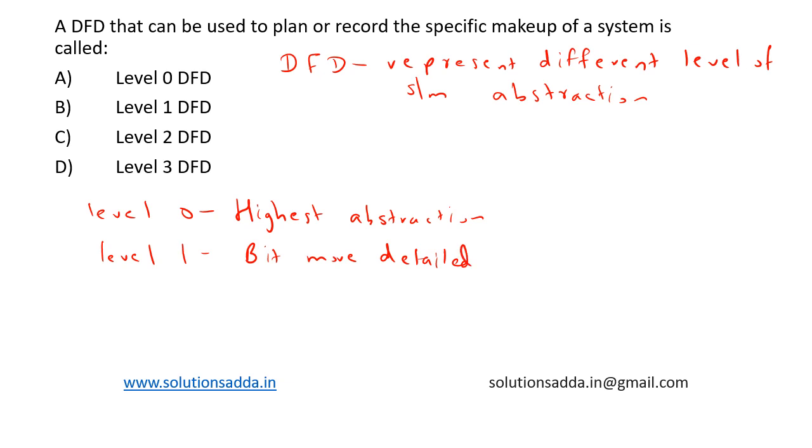The context diagram of Level 0 in Level 1 DFD is decomposed into multiple processes. At this level we highlight the main functions of the system.